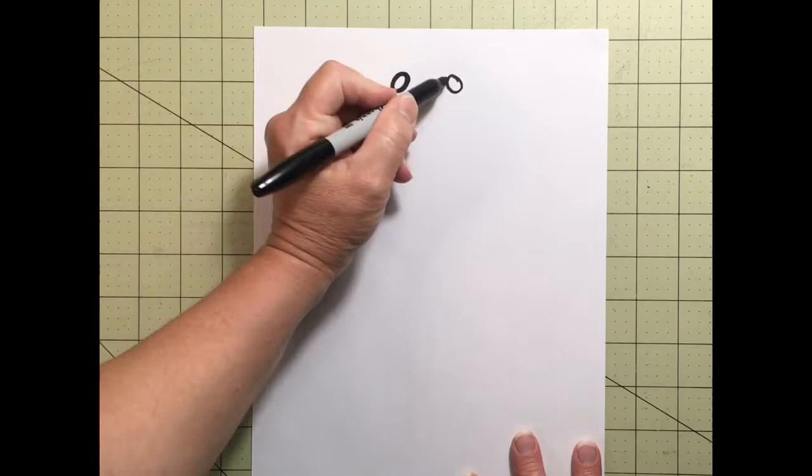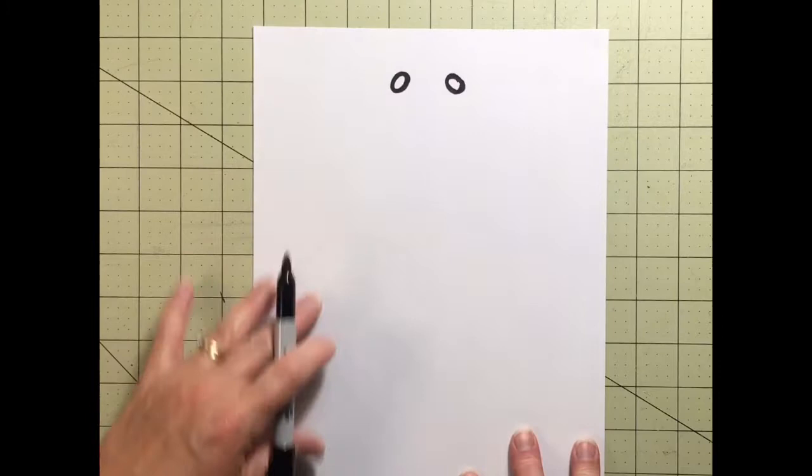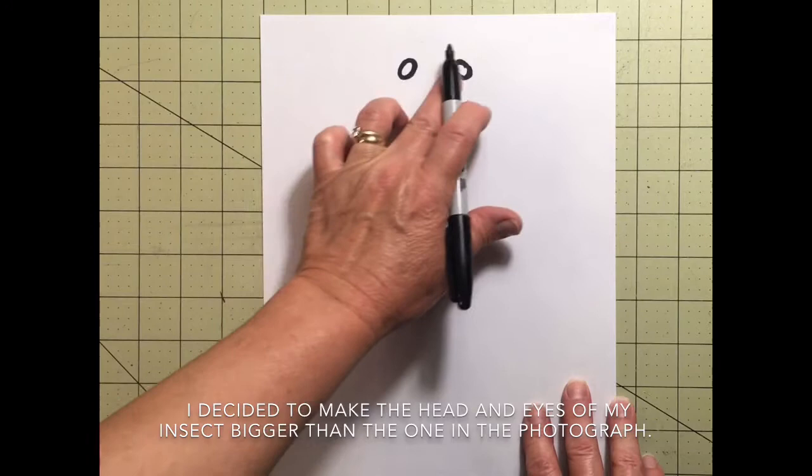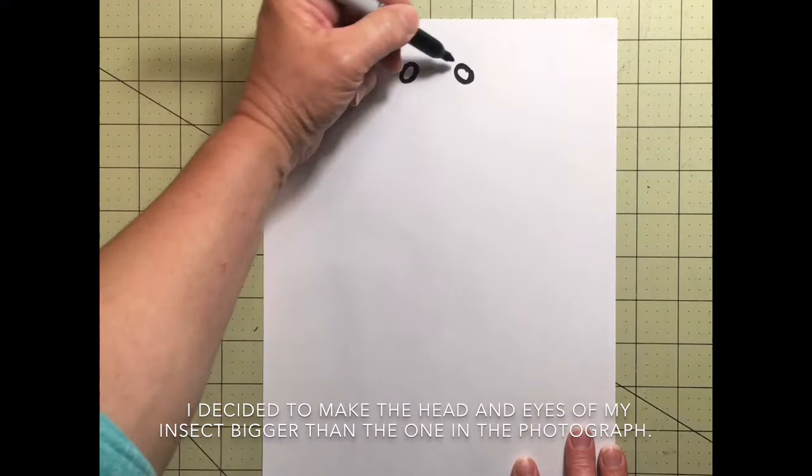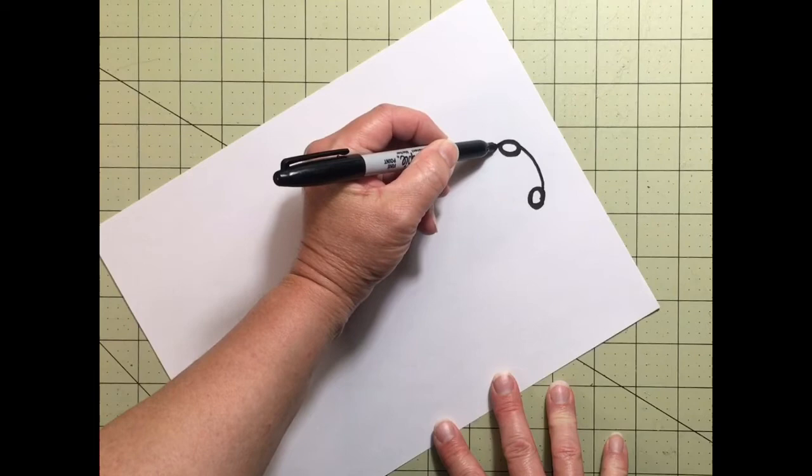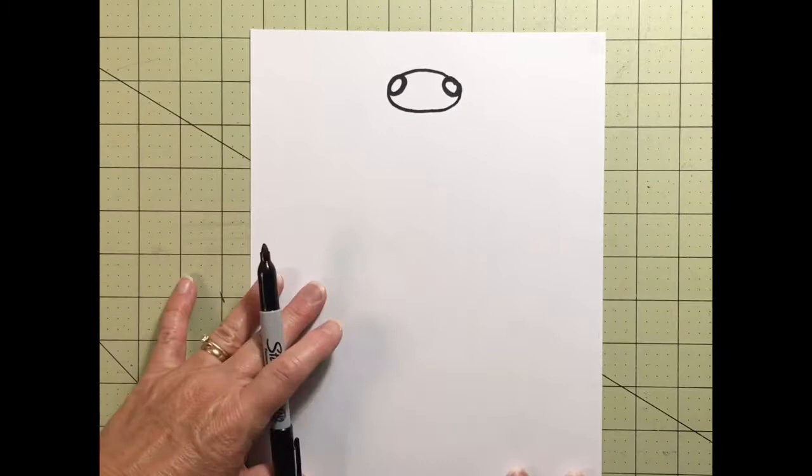Now, one thing that's true about insects is that they are the same on one side as the other, so they're mirror images from left to right. We've talked about bilateral symmetry in art class before, and you probably have in science as well. I'm giving my guy eyes with a little space between here, and then I'm going to connect those eye shapes with a line, and then I'm going to make another line curving underneath to make his head.